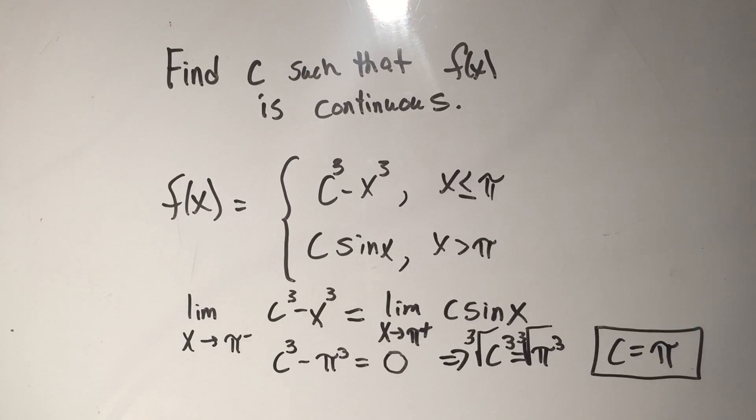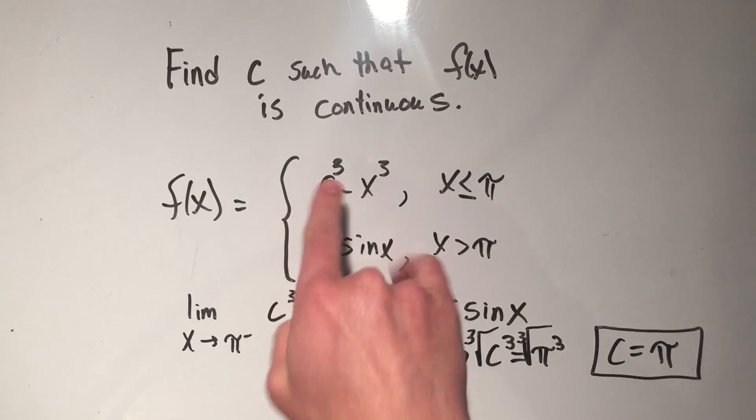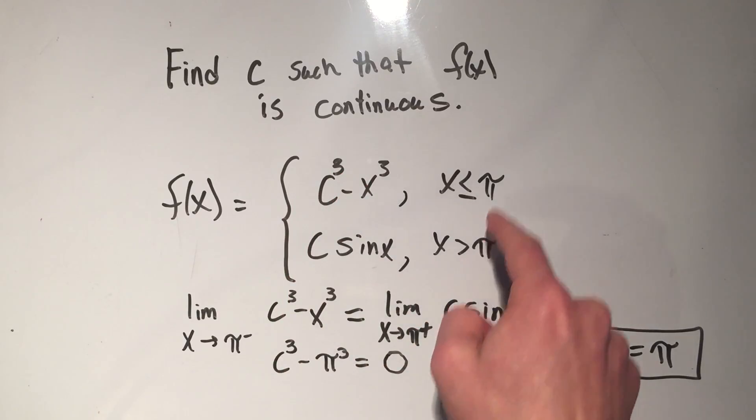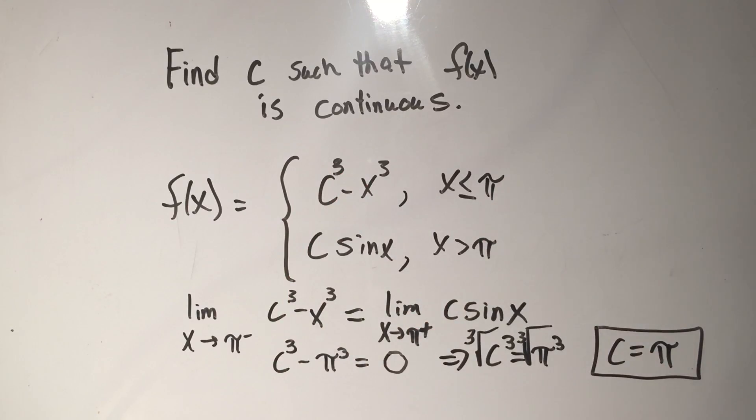So that's how you do these problems, where it says find a number to make this function continuous. Sometimes they have like a and b, maybe two numbers you need to find. But it's really the same process. You're just going to set these two equal to each other, and then plug in the x value, and then you'll solve. Okay, I hope you got something out of that. Have a great day. Please like and subscribe.